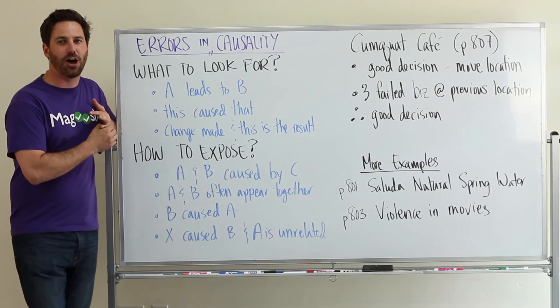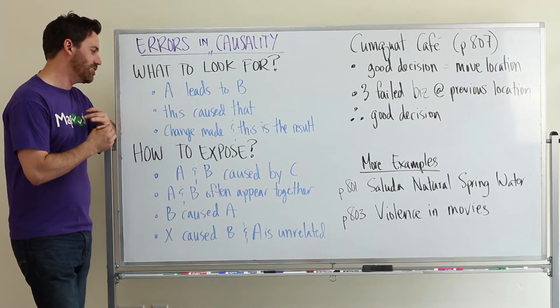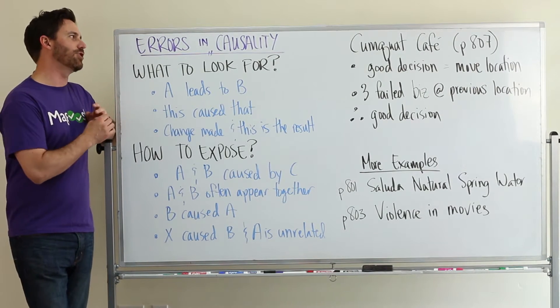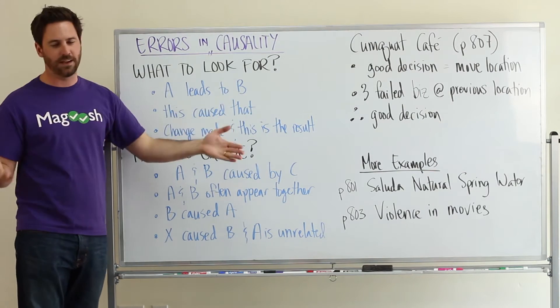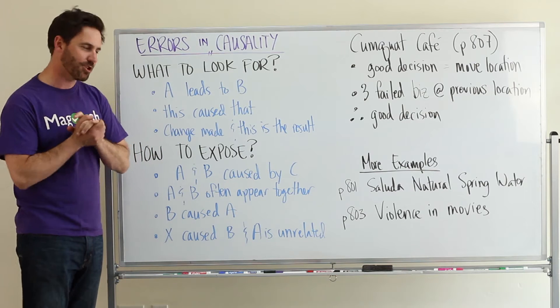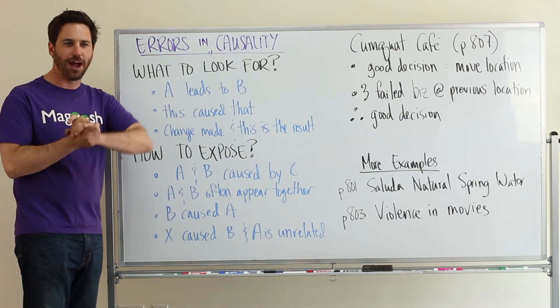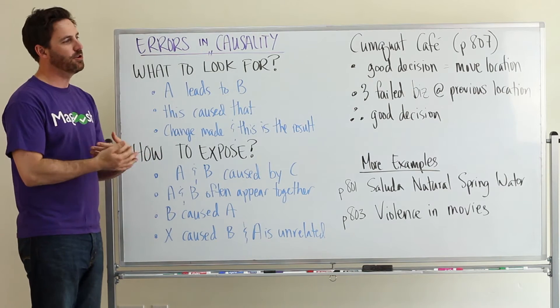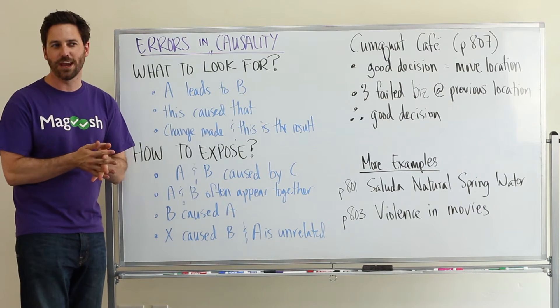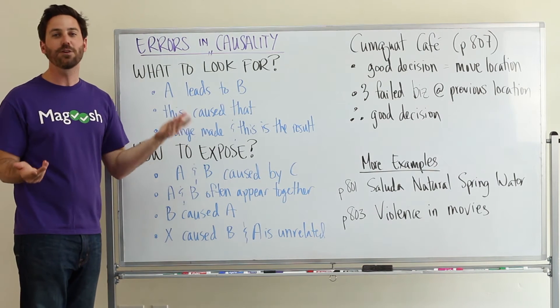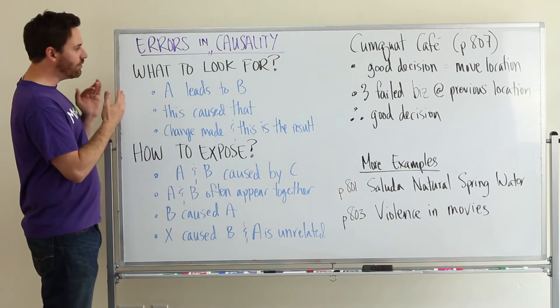Today we're diving into more common flaws in the argument analysis portion of the GMAT, and diving into errors in causality. So this is a super common flaw, not only on the test, but just in daily life. I'm sure if you start paying attention, you'll notice that this flaw pops up a lot, because it's a natural thing for humans to do, is to confuse causality of things. We look for connections when we might not have a lot of reasons to believe why things might be connected.